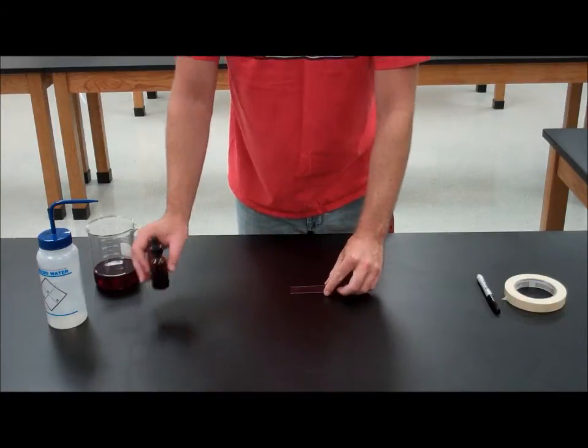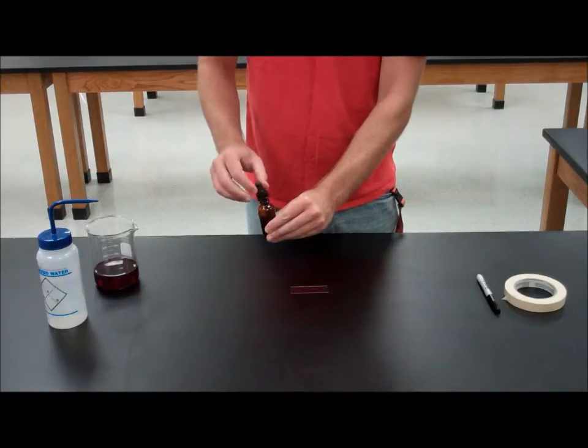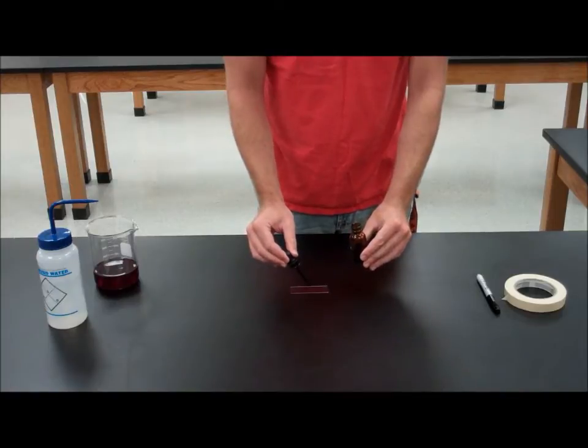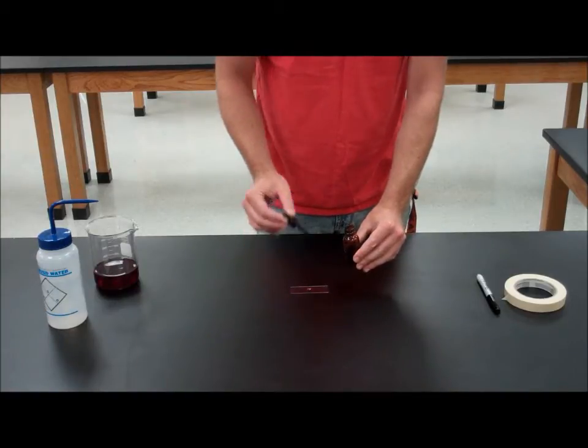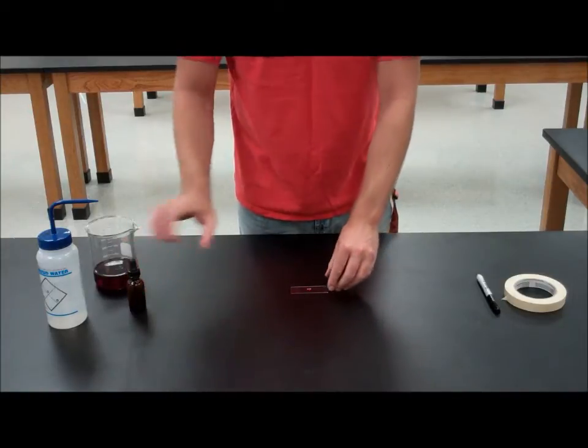Your next step is to take your stain and put a small drop so that it covers your sample. You don't need very much stain, just enough to cover it, so keep your drops small to save stain for the other groups.